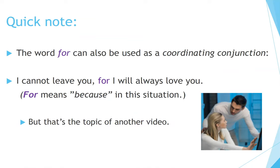Quick note: the word 'for' can also be used as a coordinating conjunction. For example: 'I cannot leave you, for I will always love you.' In this situation, 'for' means 'because.' But that's the topic of another video.